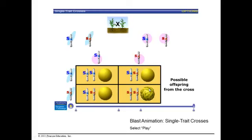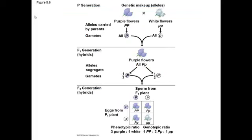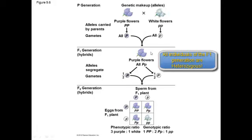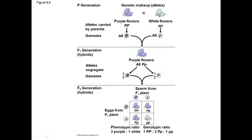That's the basics of a Punnett square. For flower color: the parent with homozygous dominant purple (big P, big P) can only give big P gametes, and the recessive white parent (little p, little p) can only give little p gametes. So every F1 offspring gets one big P and one little p — heterozygous — but their phenotype is purple flowers. Big P, big P is one genotype; little p, little p is the other. But purple flowers is the shared phenotype.